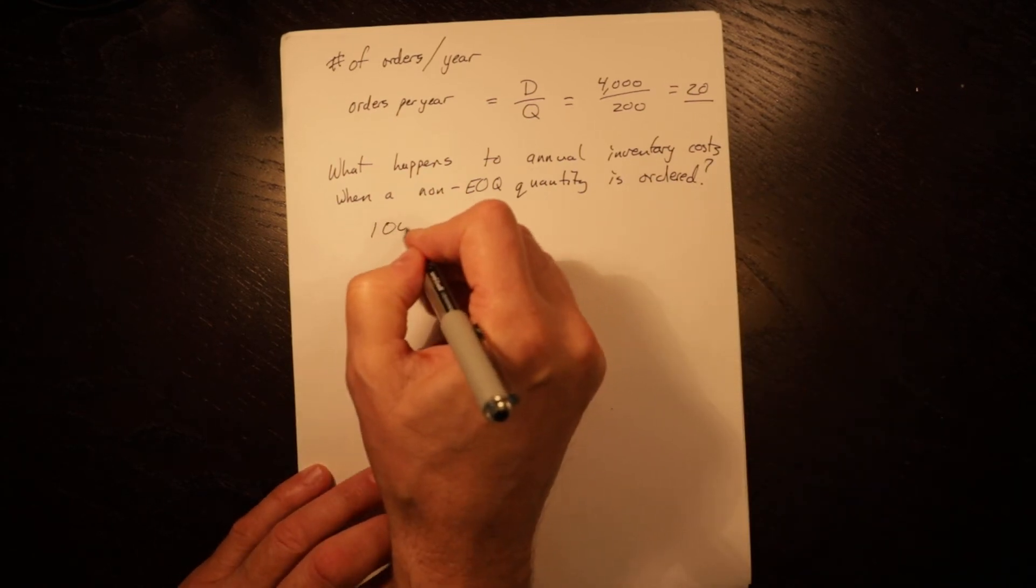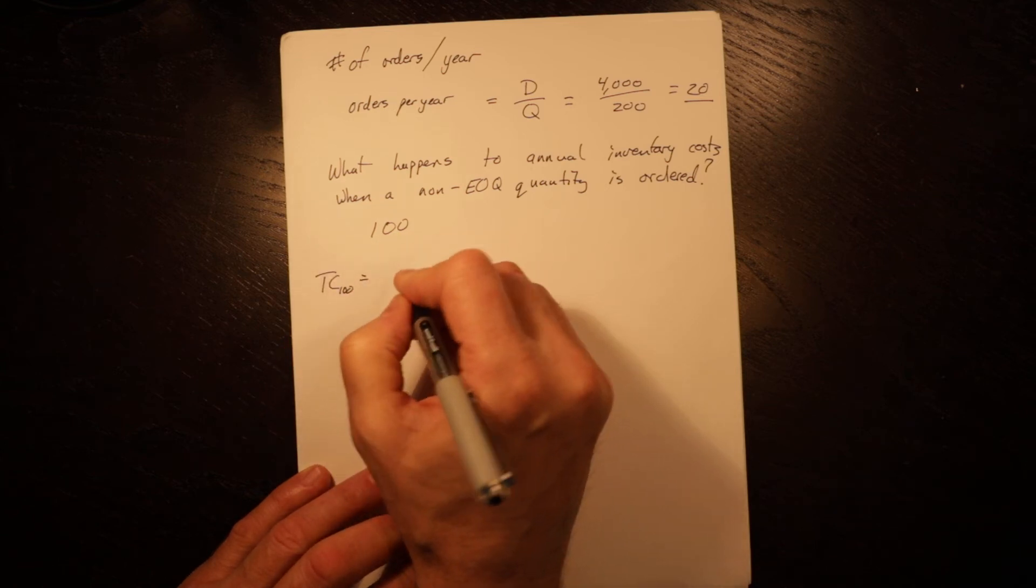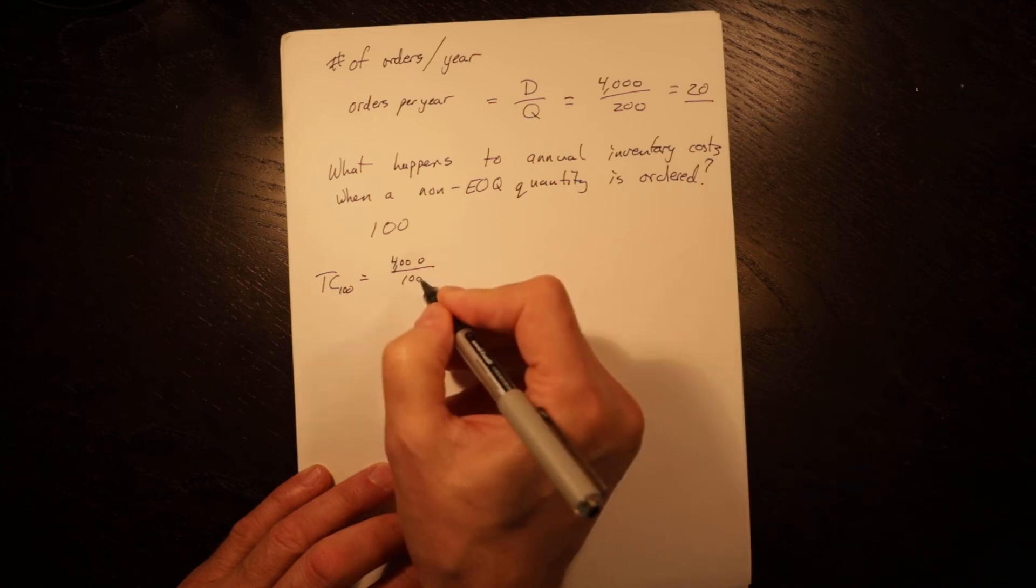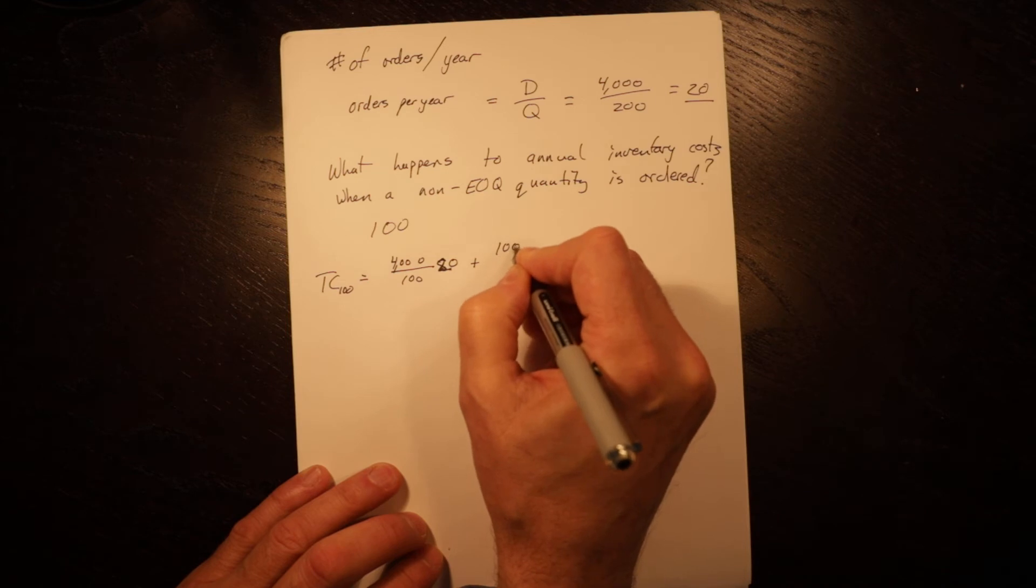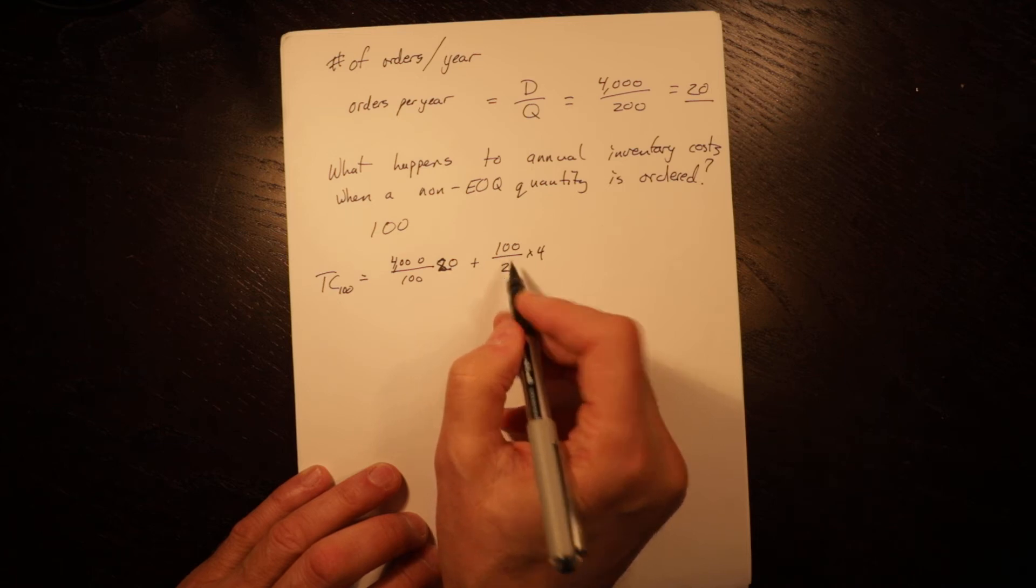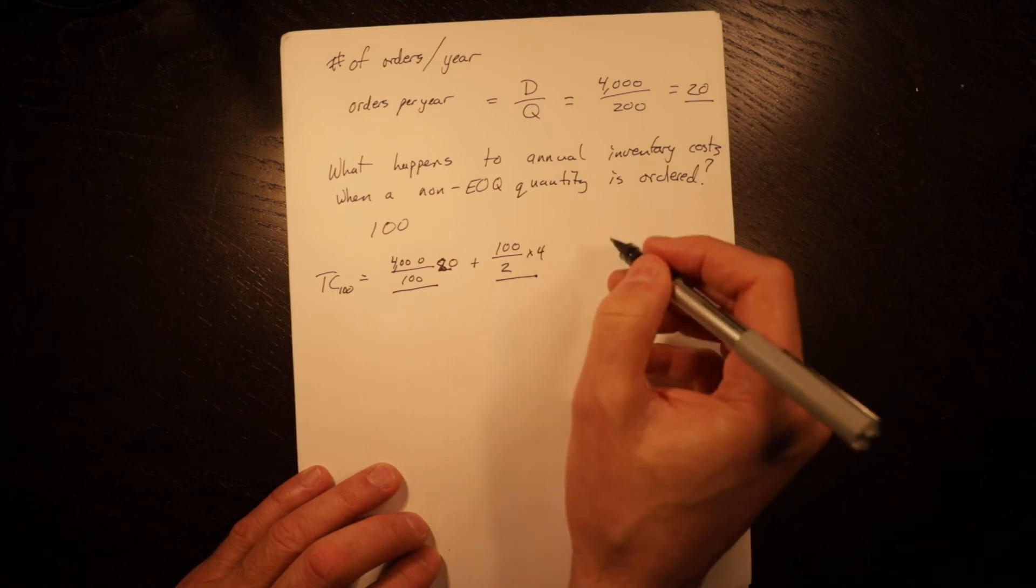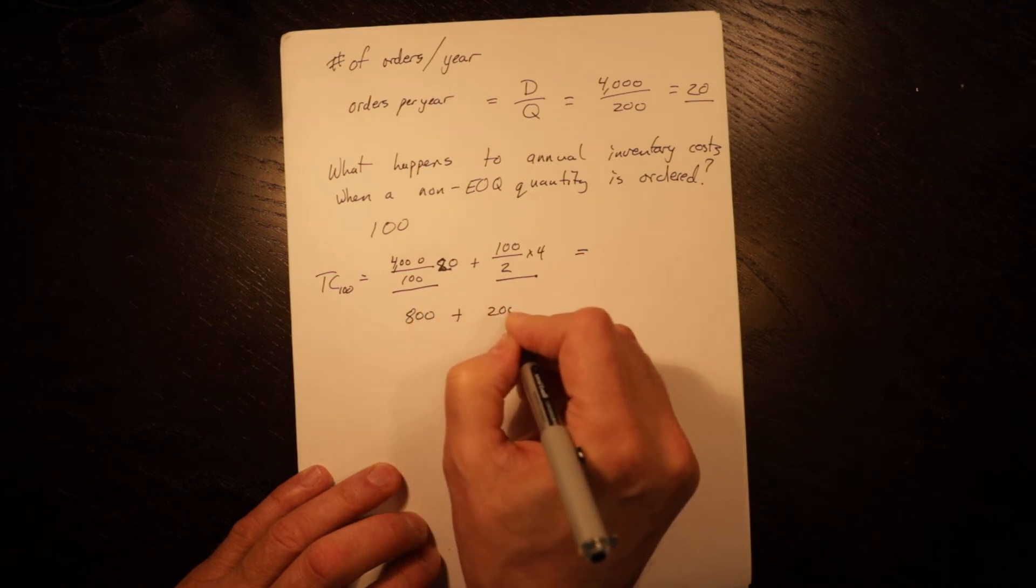Let's look first at 100. If we order 100, total cost for 100 equals 4,000 divided by 100, so we're ordering less and we're going to have more orders, times S which was 20, plus 100 divided by 2 times 4. Now our average inventory is going to go down, so our total holding costs go down because we're ordering a sub-EOQ quantity, and our total ordering costs are going to go up.